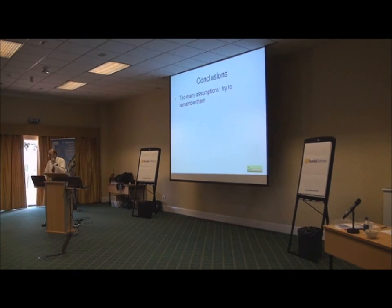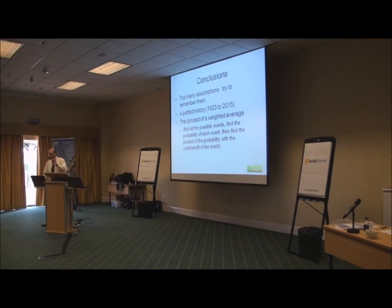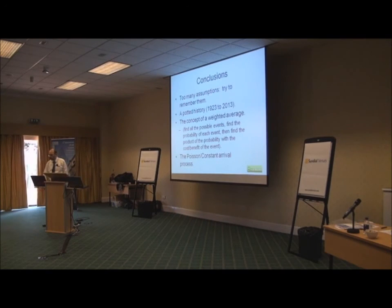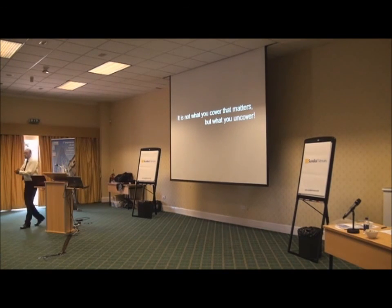So to conclude: remember we have too many assumptions and we must remember them — removing all of them leads to the final equation. We did a potted history and introduced the concept of a weighted average: find all possible events, find the probability of each, multiply the probability by the cost or benefit of the event, then sum them all up. We looked at the Poisson versus constant arrival process. As I always say to my students: it doesn't really matter what you cover — it's what you uncover. Thank you.